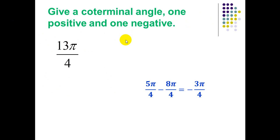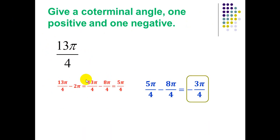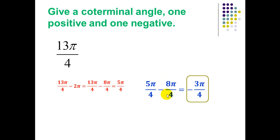Give coterminal angles, one positive and one negative, for 13π/4. Subtract 2π: 13π/4 minus 2π equals 13π/4 minus 8π/4, which equals 5π/4. Then take 5π/4 minus 8π/4 (which equals 2π), giving negative 3π/4. So the two coterminal angles are 5π/4 and negative 3π/4.